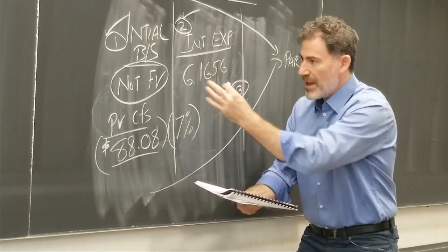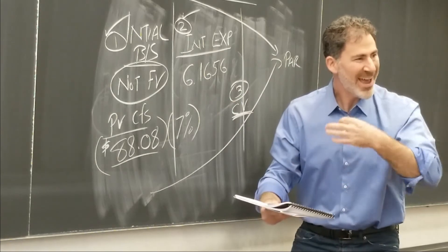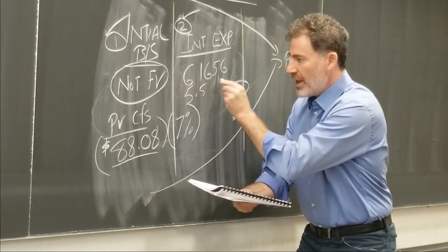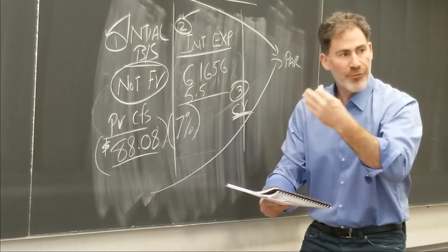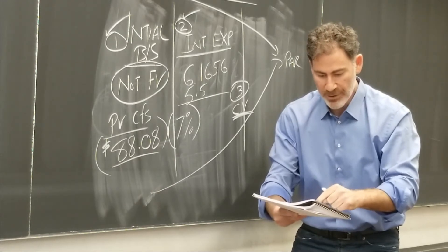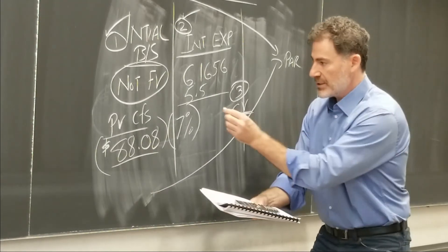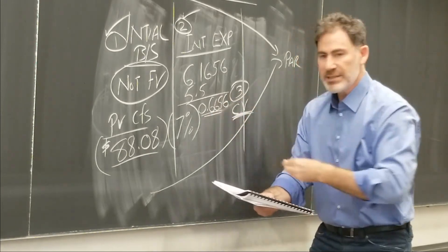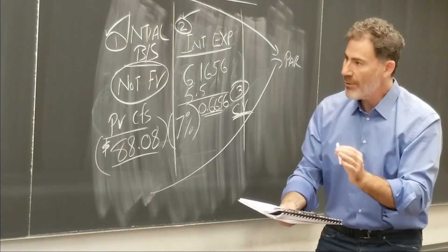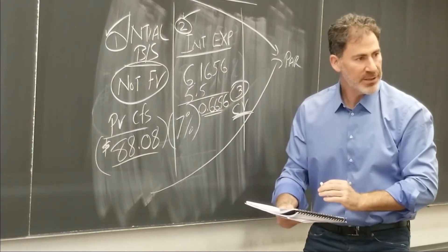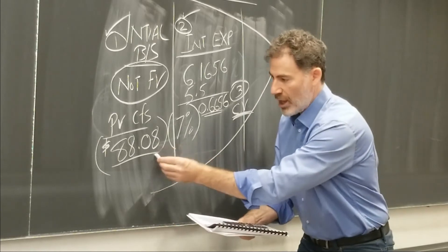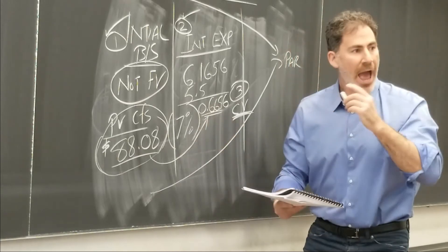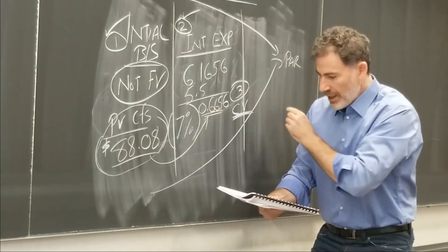Now, out of this interest expense, which is on the income statement, we have the cash. And the cash comes from the coupon. So our coupon was 5.50. So from this, I can now calculate the amortization, which is 0.6656. So what does this tell me? Well, now it tells me what the carrying value is at the end of the year. I've got the initial liability of 88.08. I'm going to add the amortization, and I will get the carrying value.